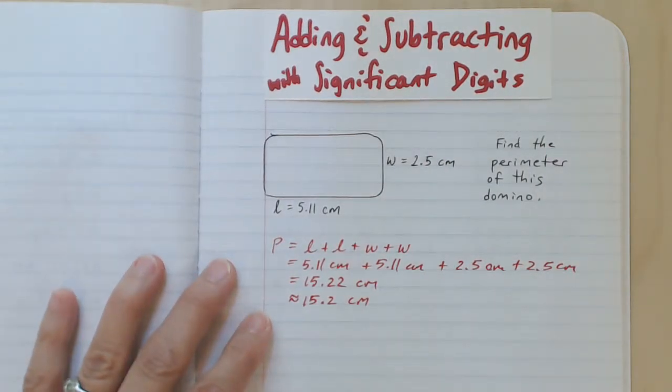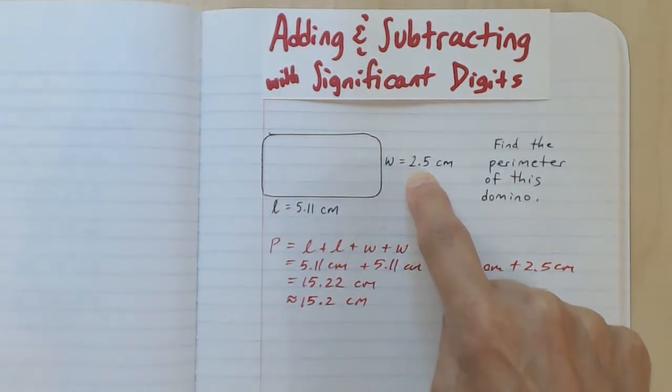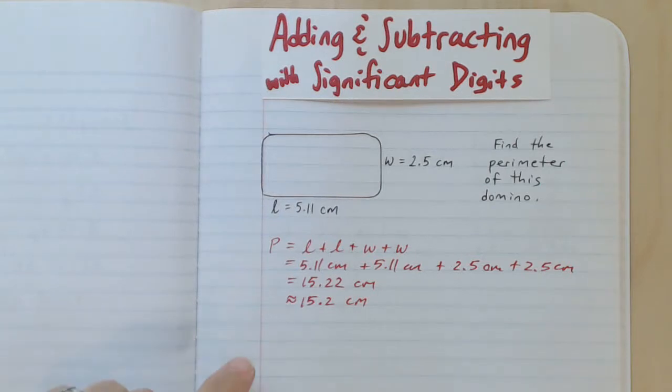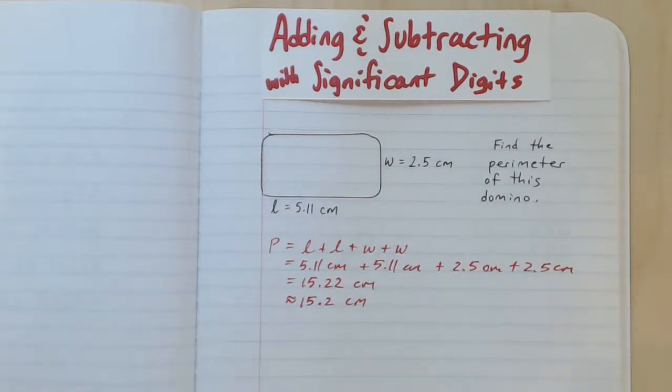Well, the rule for working with significant digits in addition and subtraction is that we need to pay attention to this two significant digits right here and we need to say that our answer has to be rounded to the number of decimal places, which is one digit after the decimal place.